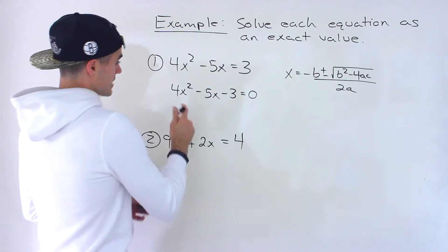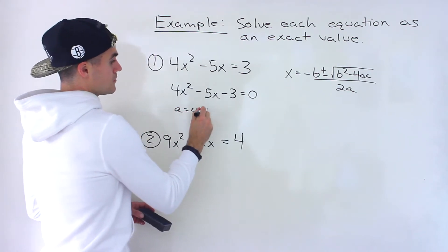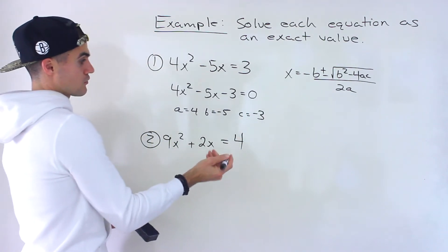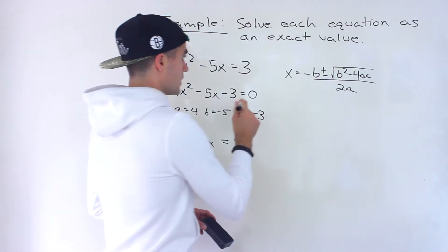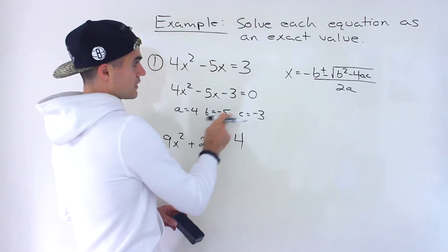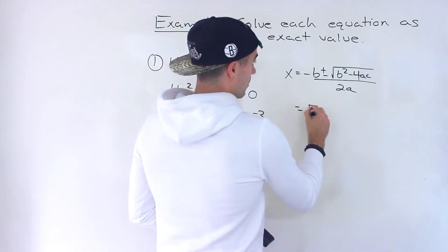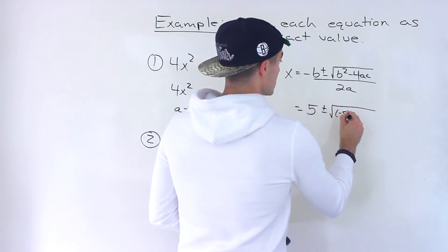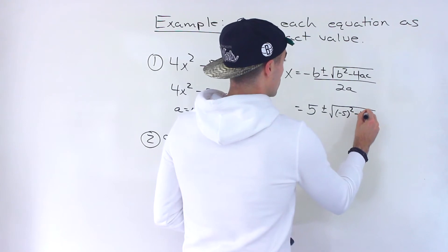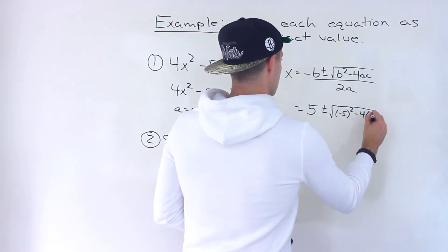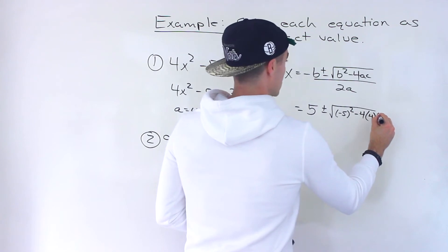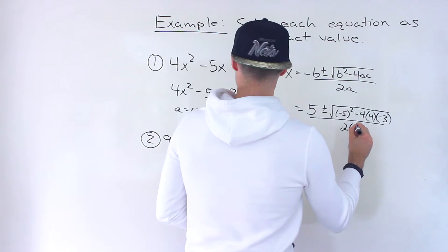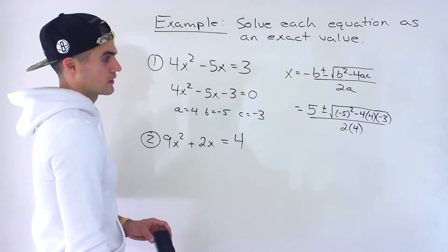In this case, the a value is four, the b value is negative five, and the c value is negative three. So we just have to plug it in. The b value is negative five, so negative negative five turns into a positive. We'll have positive five plus or minus the square root of (-5)² - 4 times the a value, four, times the c value, negative three — all over two times four.